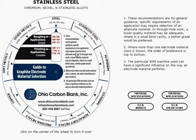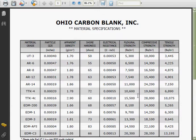Simply click on the material specifications button on the right-hand side. A window will open, displaying all of Ohio Carbon Blank's materials and their specifications.